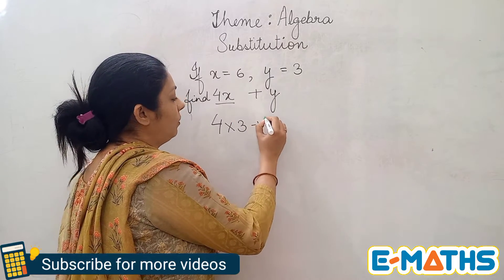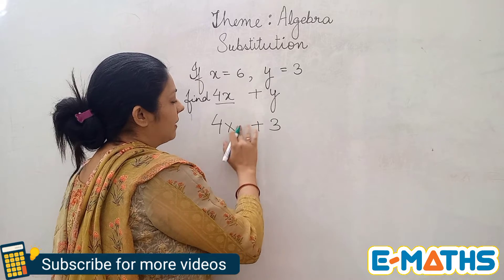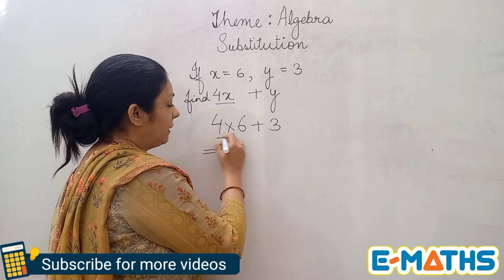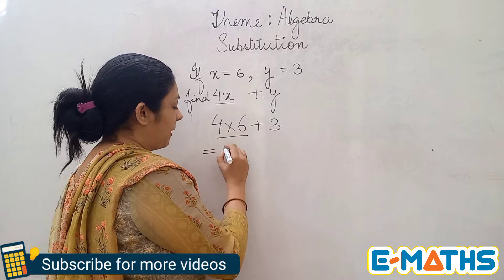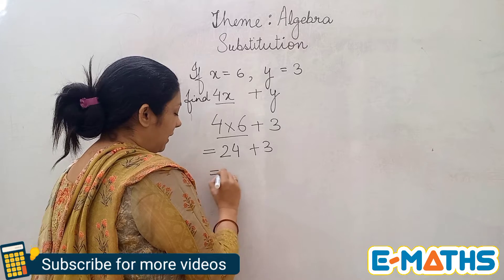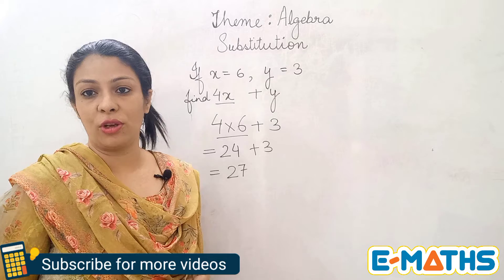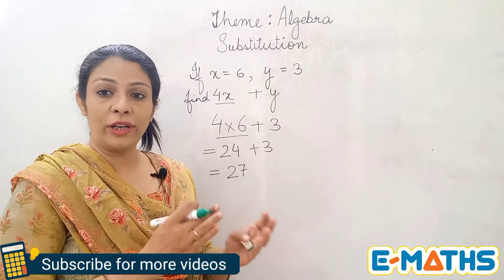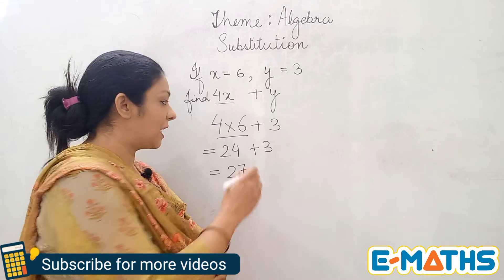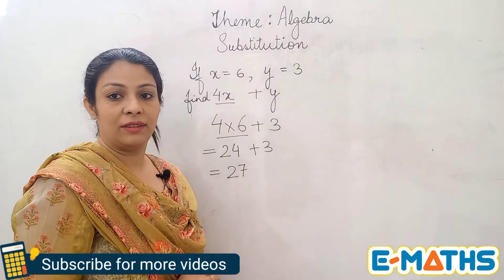I'll rub off that 43 and put in the value of y, which is 3. I had taken the wrong value of x — it is 6, so I'll put a 6 here. In the next step, 4 times 6 is 24, and then plus 3, giving a final answer of 27. The reason for multiplying first is the BODMAS rule — according to BODMAS, multiplication comes before addition. That's why I did the multiplication part first and then added the numbers to get the final answer.